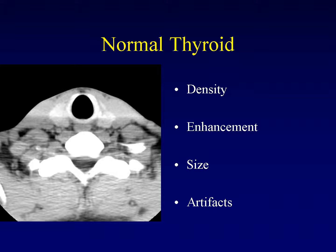The normal thyroid gland sits at the base of the neck. It has two lobes, one on either side of the trachea, and a connecting isthmus across the center. There's also a variable pyramidal lobe extending superiorly from the center of the isthmus.